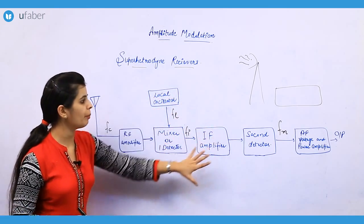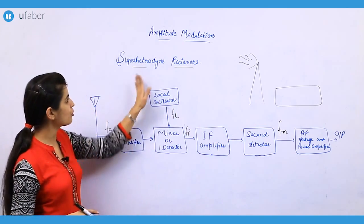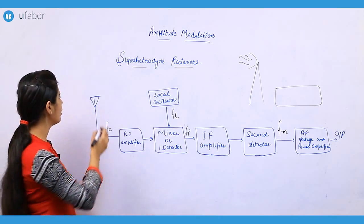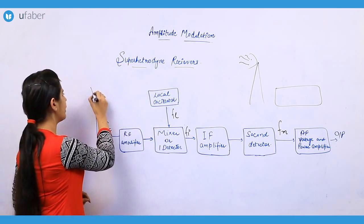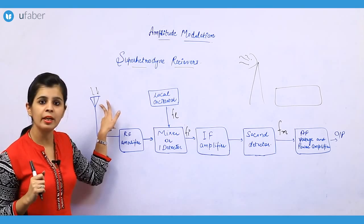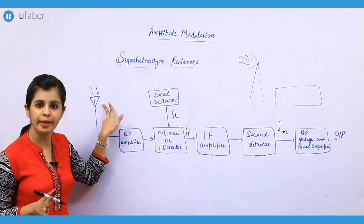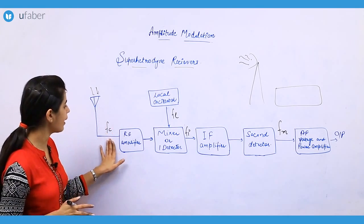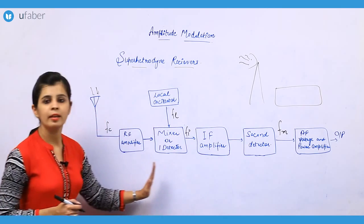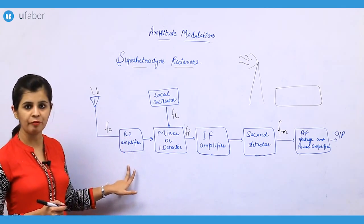This is the rest of the part — this is the super heterodyne receiver. Here you can see that you have an antenna receiving the signals, which are modulated signals. You can see different blocks in the receiver. The first block is the RF amplifier.